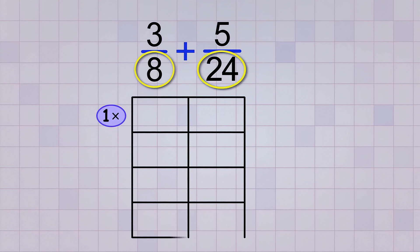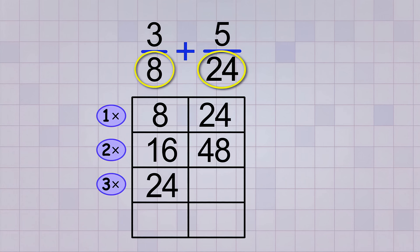First, let's multiply them both by 1. Well, that's easy! We have 8 and 24. Next, we multiply them both by 2, and that gives us 16 and 48. I still don't see anything in common, so let's multiply them both by 3. 3 times 8 is 24, and 3 times 24 is 72.